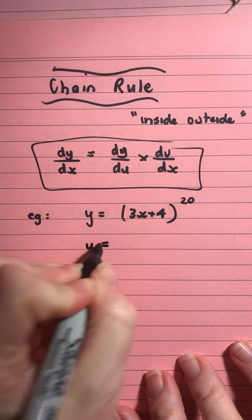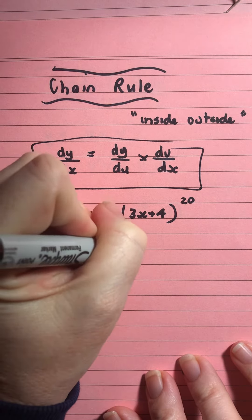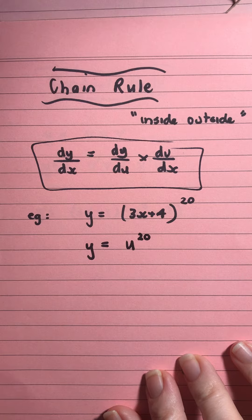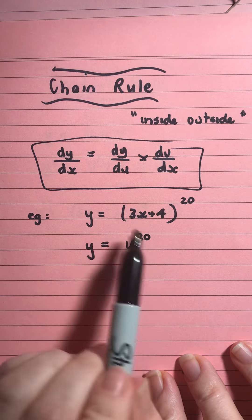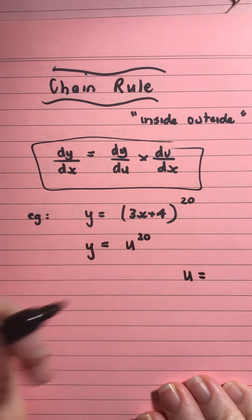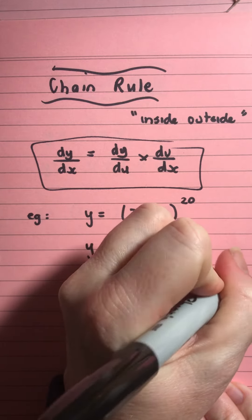So, my first step is always to write my function as u to the power of something. So, rather than having the x in there, and then over to the side, I write u is equal to 3x plus 4.